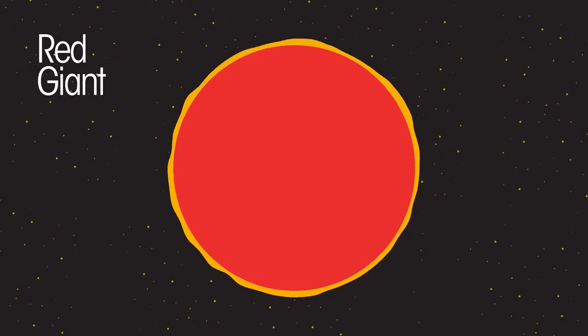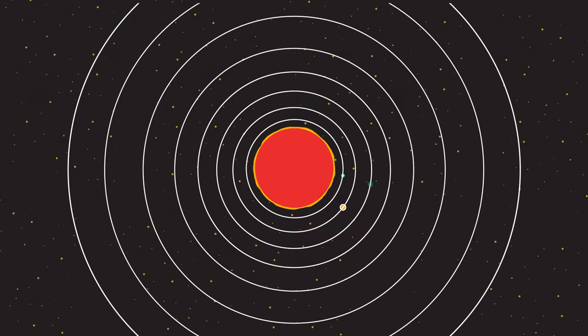The star now expands and becomes what is called a red giant. When our Sun becomes a red giant, it will expand to such a size as to engulf the three inner planets.